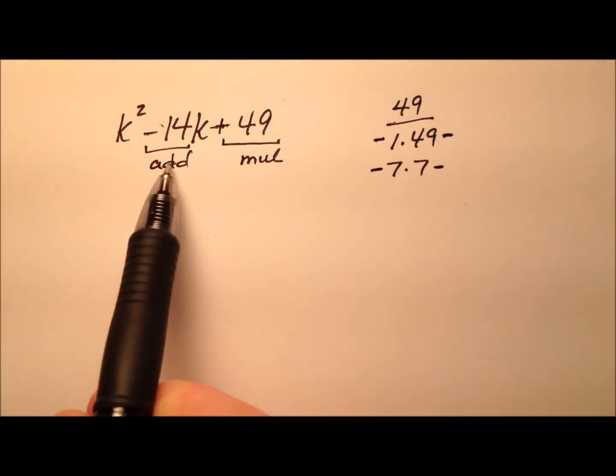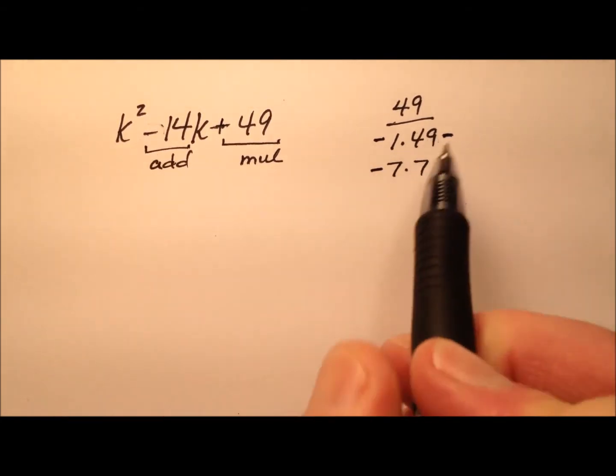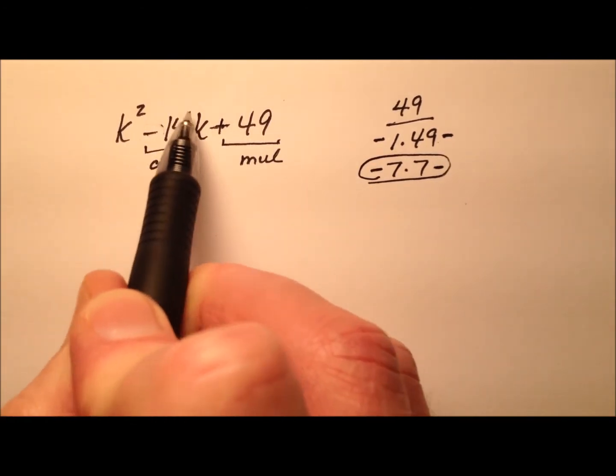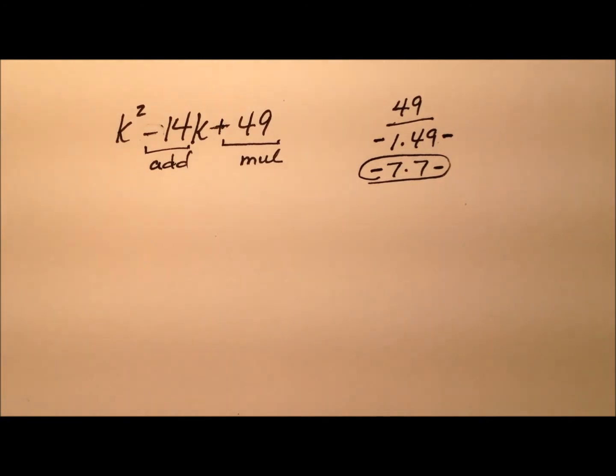So negative 1 and negative 49 will not add up to negative 14, but negative 7 and negative 7 do add up to negative 14 and multiply to make positive 49.